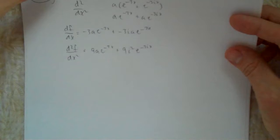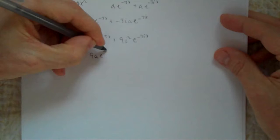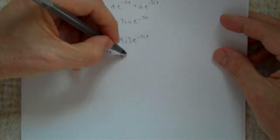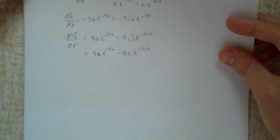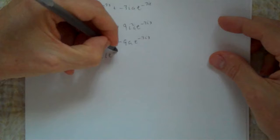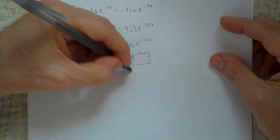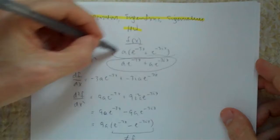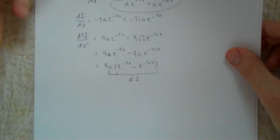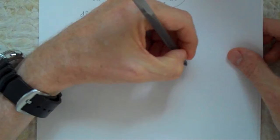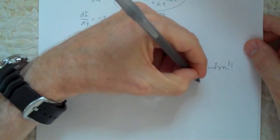Rewriting: we get 9Ae to the minus 3x minus 9Ae to the minus 3ix. I can factor out 9: that gives 9 times [Ae^(-3x) minus Ae^(-3ix)]. This is not f, because f would require a sum not a difference - so this is NOT an eigenfunction.